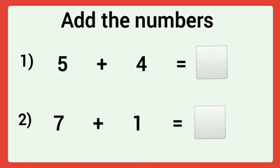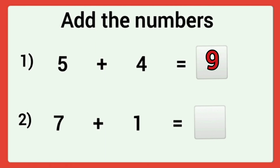Next worksheet. Question number one: five plus four. Keep five in your mind, then add four fingers and start counting. Five — next number is six, seven, eight, nine. Five plus four is equal to nine. Then second question: seven plus one. Keep seven in your mind, add one more. Seven plus one — the next number one forward is eight. Seven plus one is equal to eight.